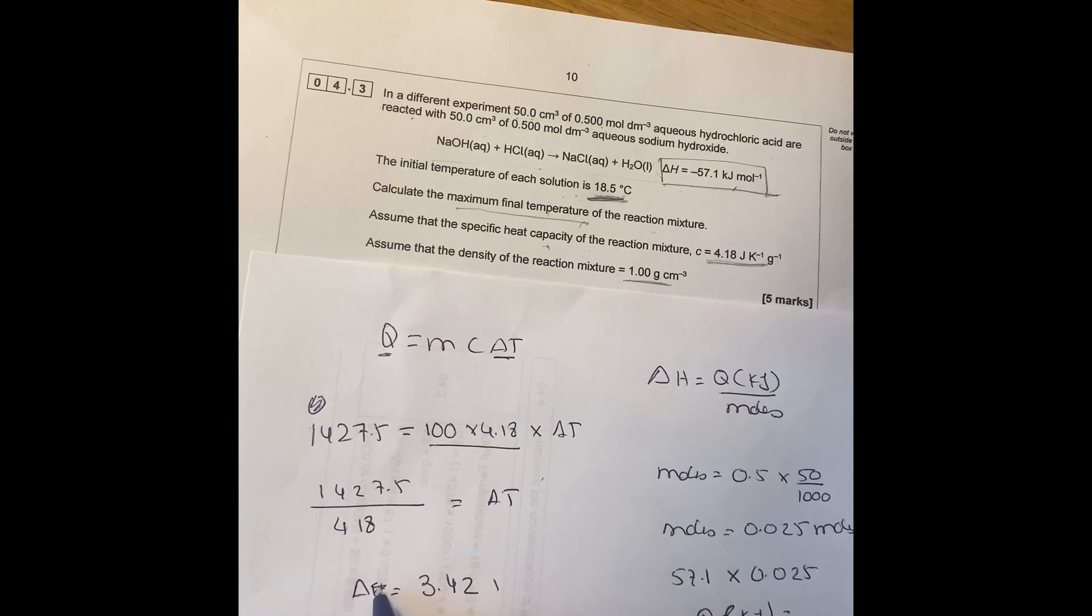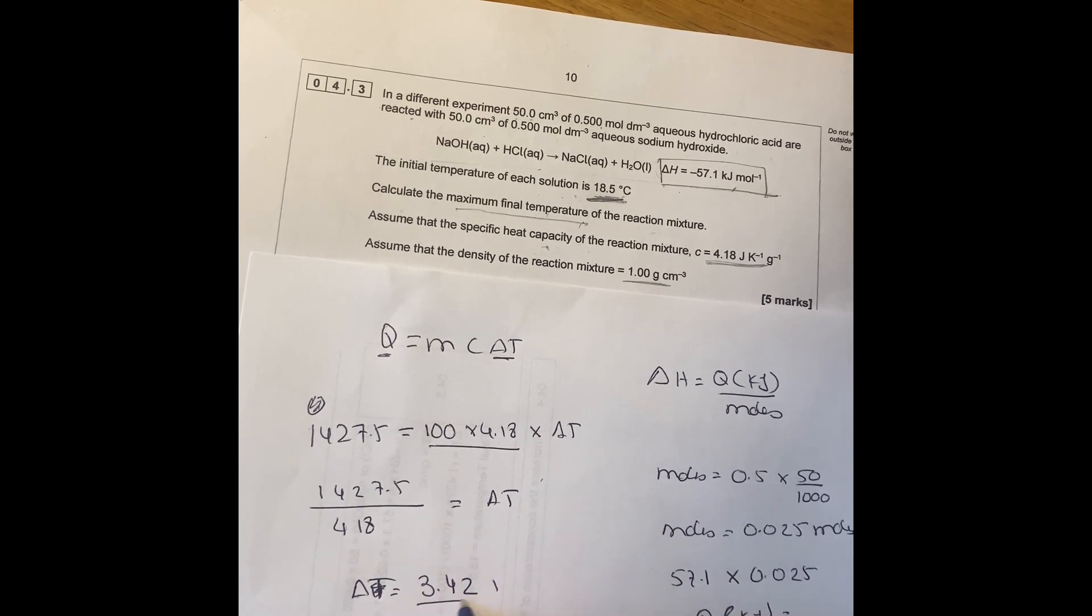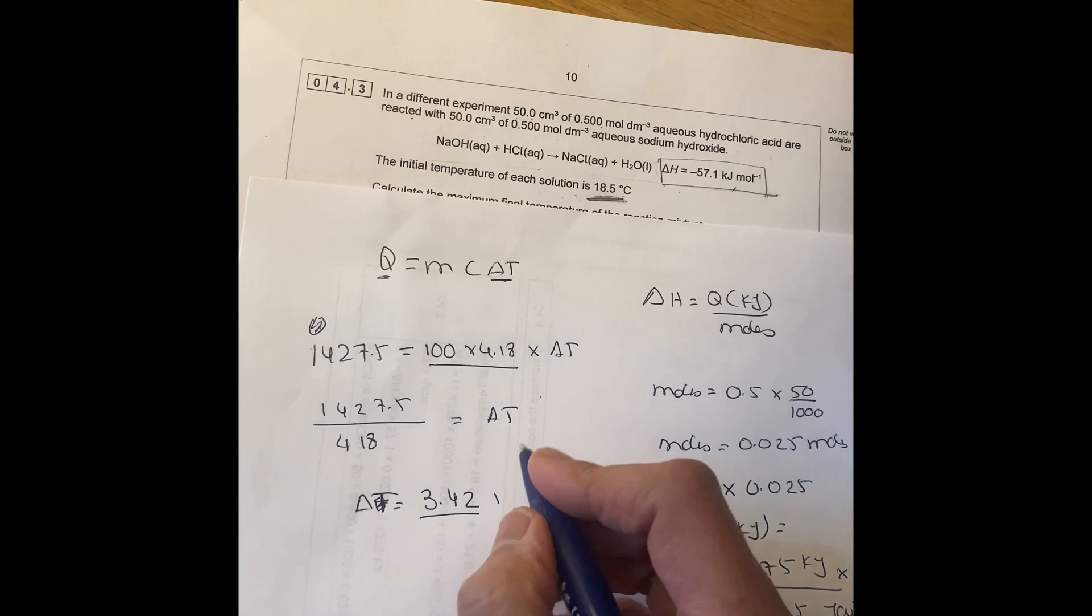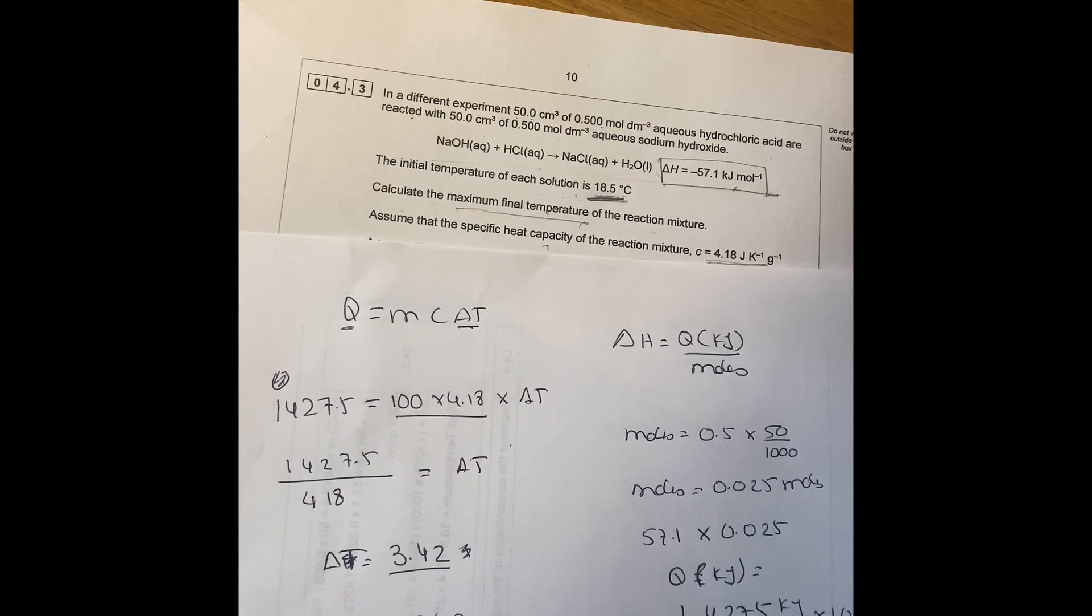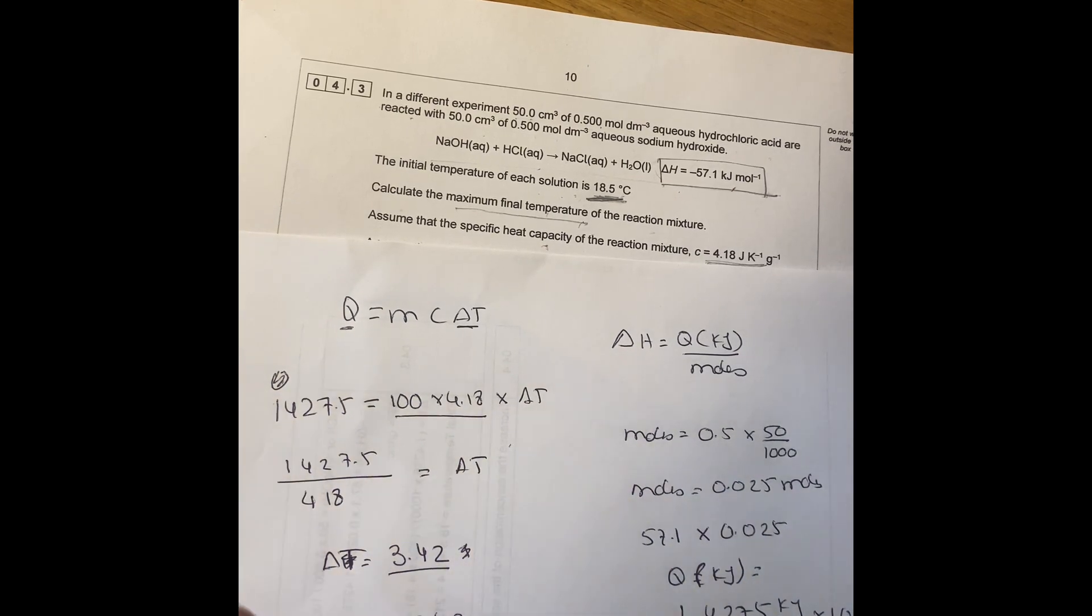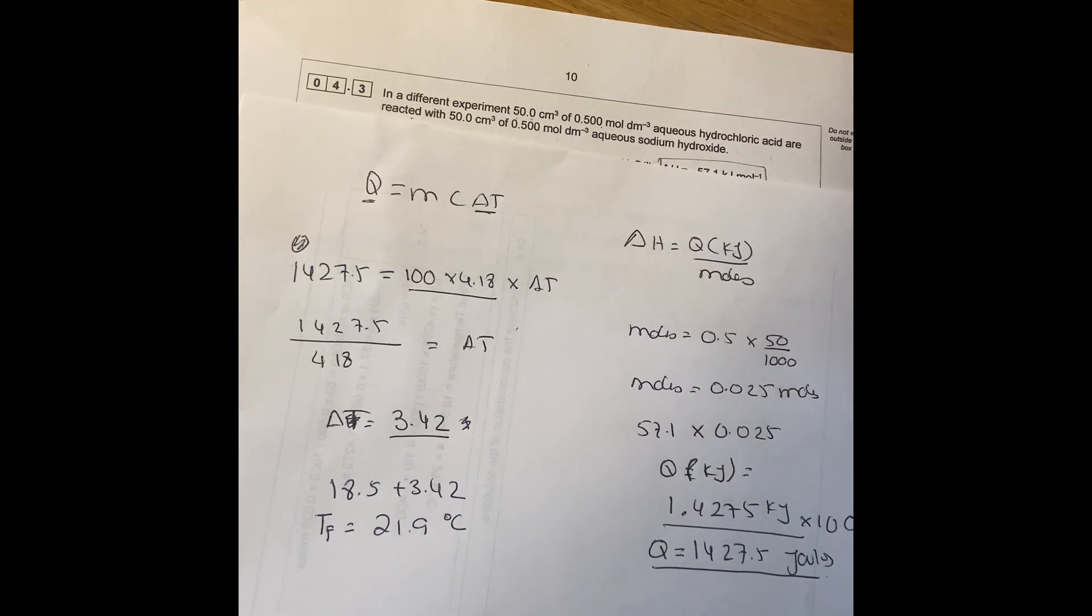Because you started at 18.5 plus 3.42, you add them together so your final temperature is going to be 21.9 degrees. So that's how you work out this question.